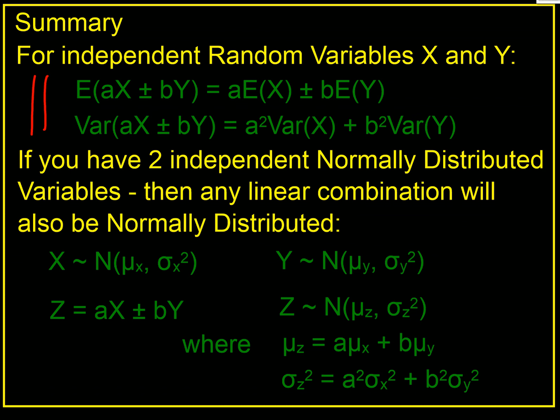That's how we do it with continuous distributions. To summarize: for independent variables, we can find the expectation and variance of a sum, difference, or multiples of them. If we add two or more normally distributed variables, the result is also normally distributed. We just add the means and add the variances.